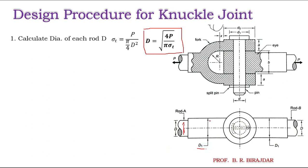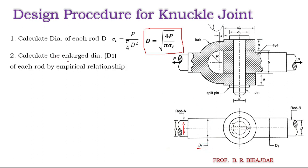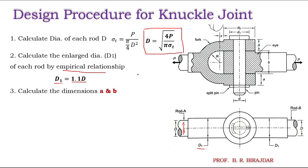The second step is to find out D1, that is the enlarged diameter of the rod. We use the empirical relation: D1 is equal to 1.1 times the diameter of the rod which we found out already. Next, we have to find out the dimensions a and b.